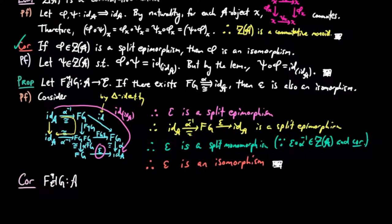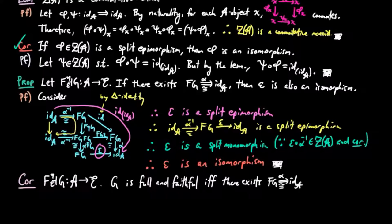Then as a corollary, we have if FG is in adjoint situation, G is full and faithful if and only if there exists a natural isomorphism from FG to the identity functor. And that follows from our previous video, which shows that G is full and faithful if and only if the co-unit is isomorphism.